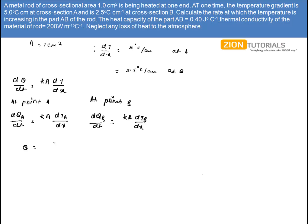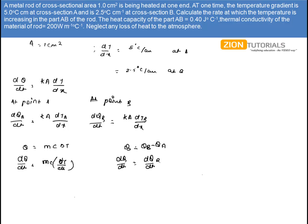Let Q be the heat gained by the rod. This Q can be written as MC·ΔT, where ΔT is the temperature variation of rod AB. Differentiating both sides, dQ/dt equals MC·(dΔT/dt). Now this Q will be equal to Q_B minus Q_A, so dQ/dt equals dQ_B/dt minus dQ_A/dt.